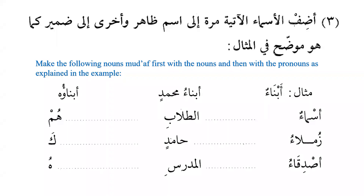Exercise 3 involves the مضاف/مضاف إليه (possessive phrase). The task: make the following nouns مضاف, first with apparent nouns and then with pronouns, as in the example. For instance: أبناء — sons — becomes أبناء محمد (the sons of Muhammad) with a noun, and أبناؤه (his sons) with a pronoun.